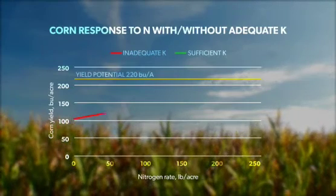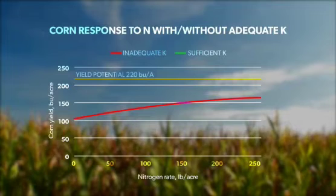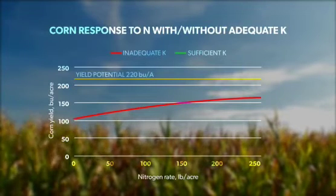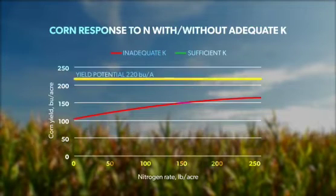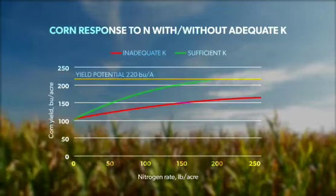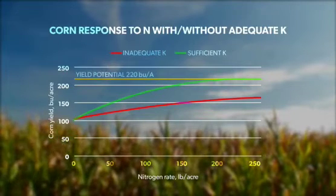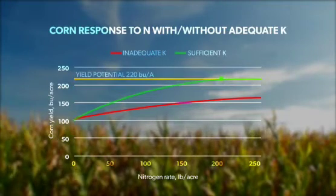In this graph, the red line represents corn response to nitrogen when potassium is not supplied to 100% sufficiency. When potassium is not supplied to sufficiency, the corn yield does not quite reach a maximum. The green line represents a scenario where adequate potassium has been supplied. Notice how the green line reaches a maximum yield and achieves that yield at a lower rate of nitrogen.